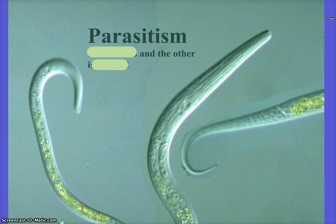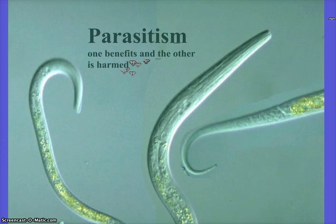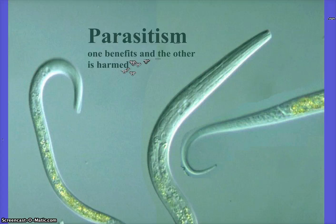Parasitism — it's a little organism that lives on or inside the host. Host is a key word — write that down. It eats the nutrients out of the host, literally feeding off it. So the parasite benefits and the host gets harmed. The difference between predator-prey and parasitism is that the parasite lives on the host. Both relationships have one benefiting and the other getting harmed.